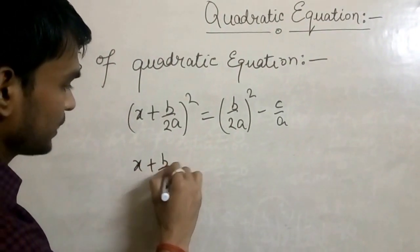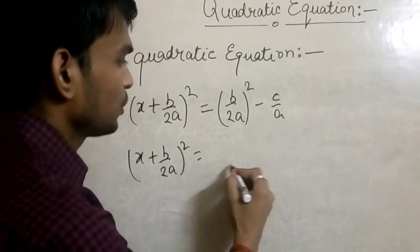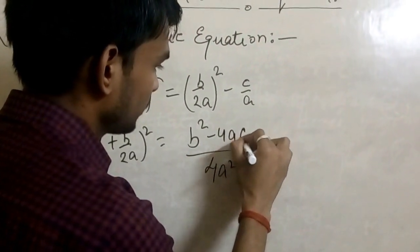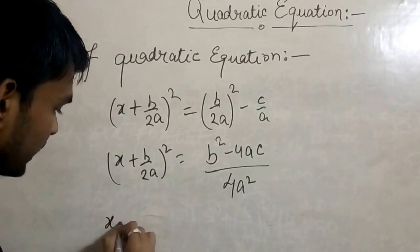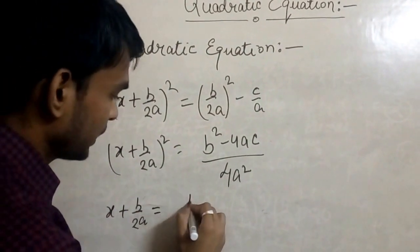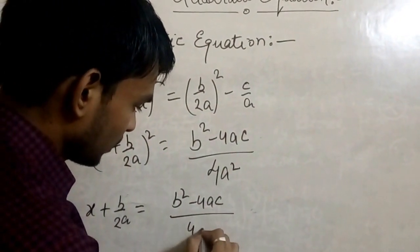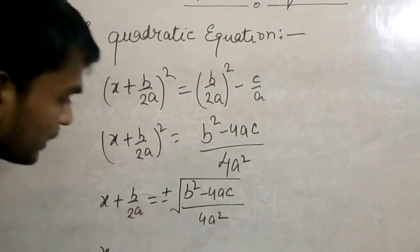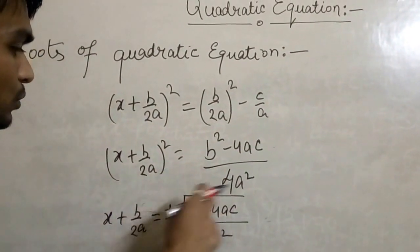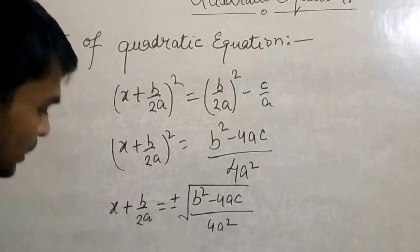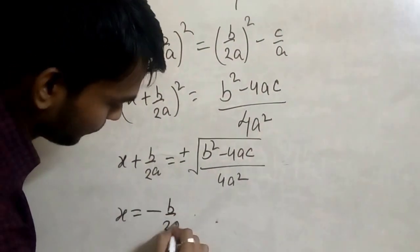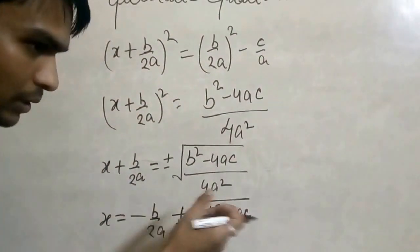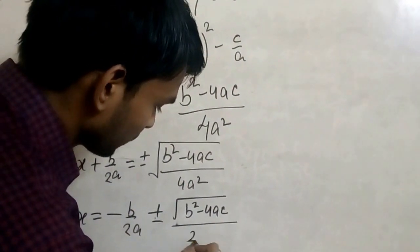Collecting the perfect square terms: x² + 2·(b/2a)·x + (b/2a)² gives (x + b/2a)². The remaining terms c/a and −(b/2a)² are moved to the right-hand side, giving (b/2a)² − c/a, which simplifies to (b² − 4ac) / (4a²). Taking square roots on both sides, we get x + b/2a = ± √(b² − 4ac) / 2a.